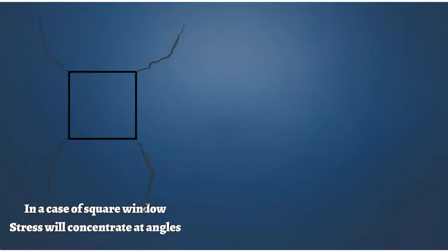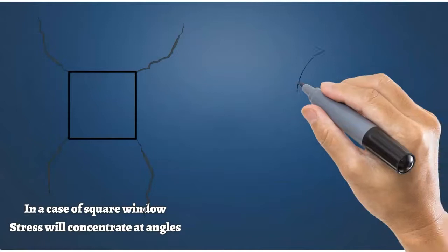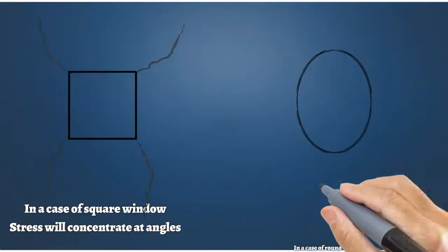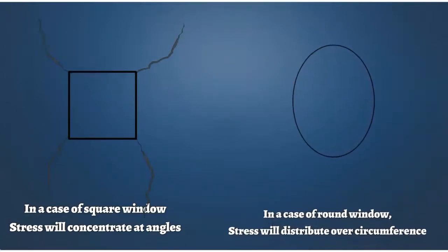In the case of square windows, this stress will concentrate at angles. And in the case of round windows, stress will distribute over circumference.